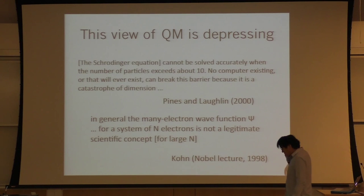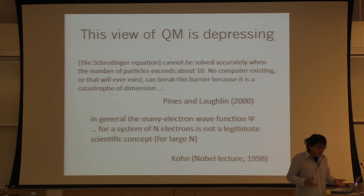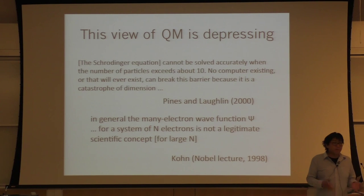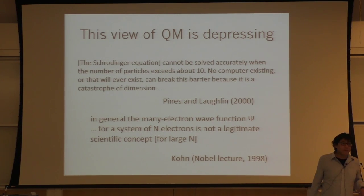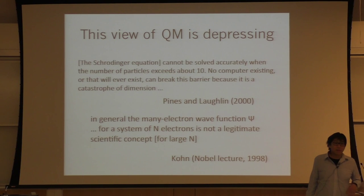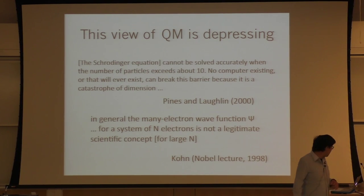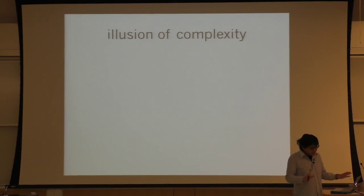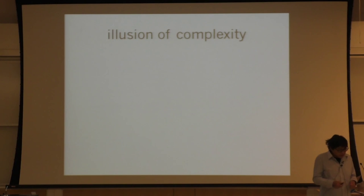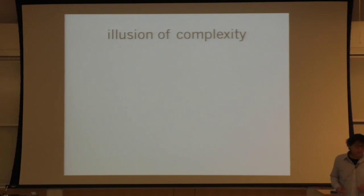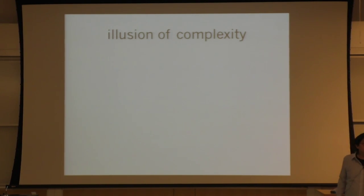We all know there's something wrong with this, because we do manipulate wave functions for systems of many particles, even systems as large as a solid with on the order of 10²³ particles. How do we resolve this contradiction? The answer is quite simple: the complexity which naively appears in quantum mechanics isn't actually always there. Most of the time, it's an illusion.